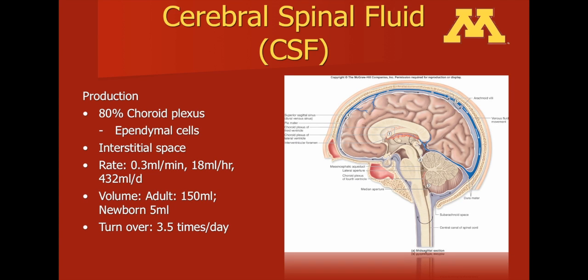This picture, which is a sagittal view of the brain, depicts the production of cerebrospinal fluid and then the route in which it traverses the ventricular system.